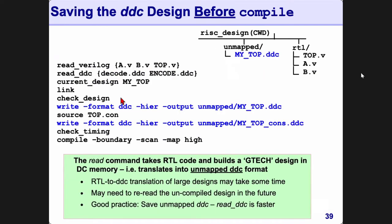After reading your Verilog, DDC files, setting current_design, running link and check_design, it is highly recommended to save your design first. Use: write -format ddc -hierarchy -output <directory/filename.ddc>. The -hierarchy flag means save all these designs into one single file. You can save it anywhere you want. Why are we doing this?